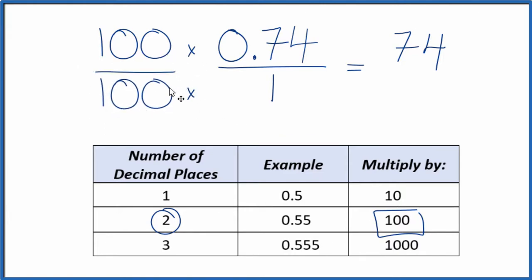Think of it this way. 100 divided by 100, that's 1. So we're multiplying by 1. Again, we don't change the value, just the way it's represented.